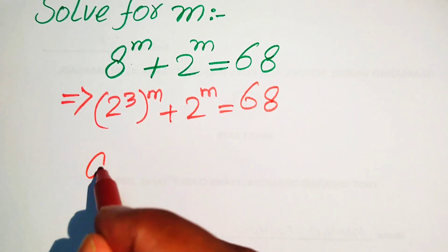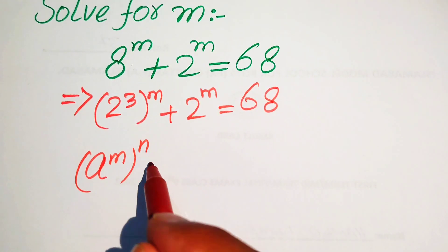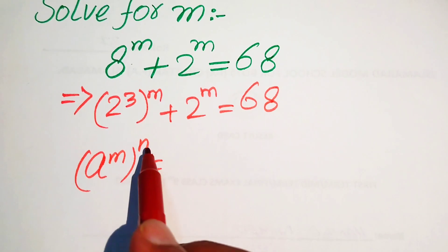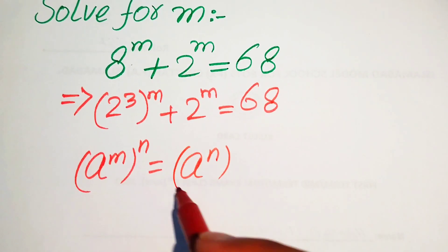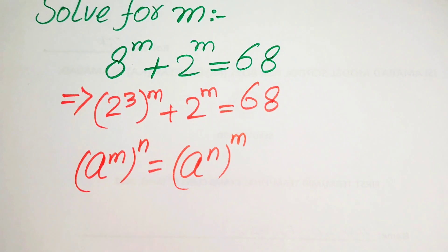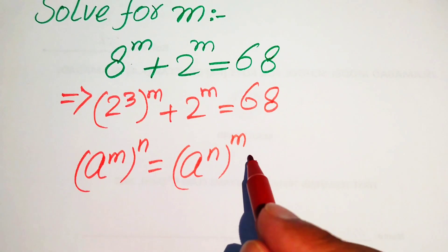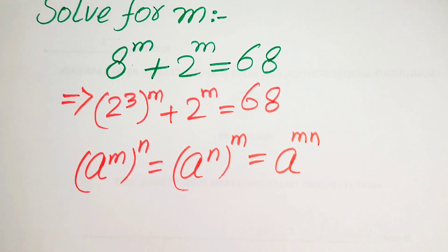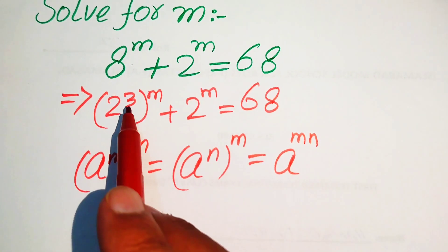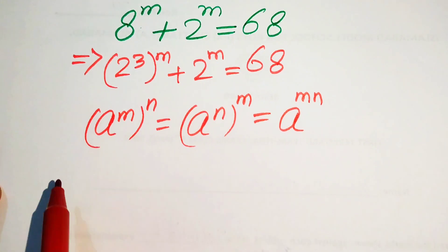The rule of interchange states that if you have a to the power of m, to the power of n, we just interchange these two exponents and it is written as a to the power of n to the power of m. This always gives us the same answer, so here we interchange these two exponents according to this rule.